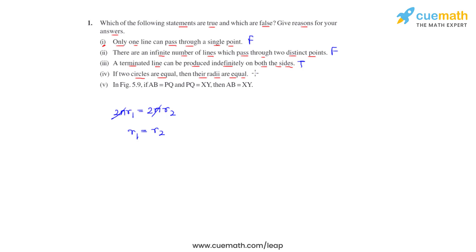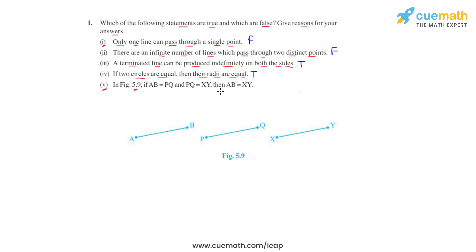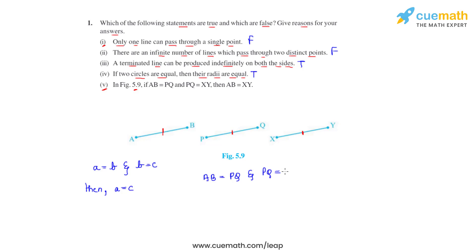Therefore, statement four of this question is true. Now the last part, statement five, says: in figure 5.9, if AB equals PQ and PQ equals XY, then AB will be equal to XY. By the transitivity law, if a = b and b = c, then a = c. Applying that here: AB = PQ and PQ = XY, therefore AB = XY. So the fifth statement of this question is also true.